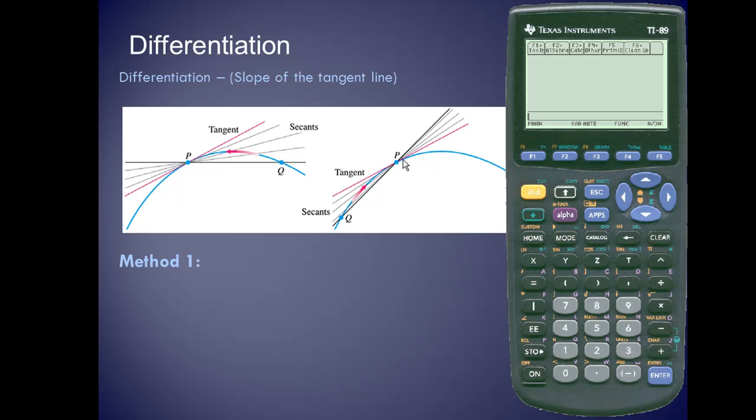On the TI-89 graphing calculator, we'll take a look at two methods of finding the derivative. The first method uses the derivative function, the differentiate, and it carries the parameters of the expression and the variable. You can also use this function to evaluate the derivative at a point. The second method we'll use is a graphical method, and it's the dy dx function.